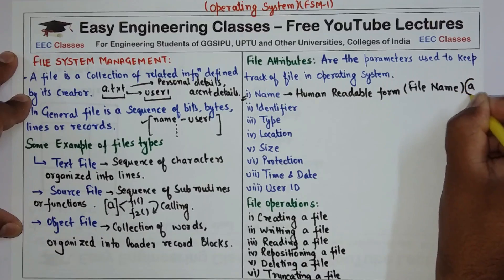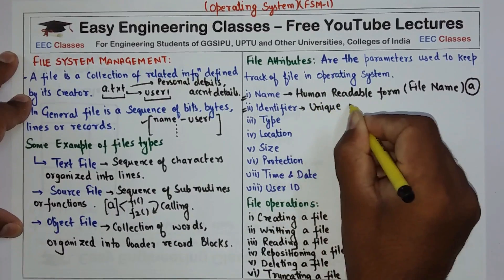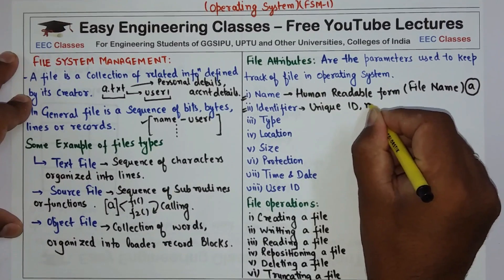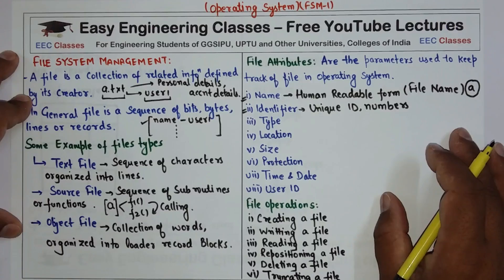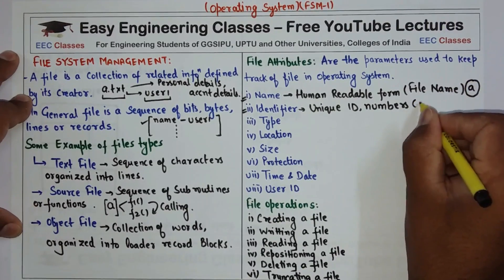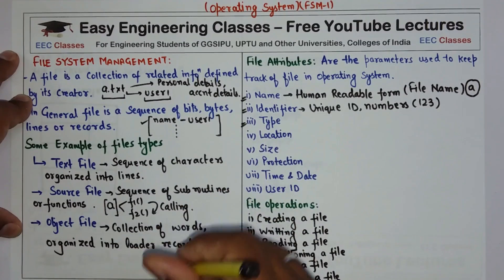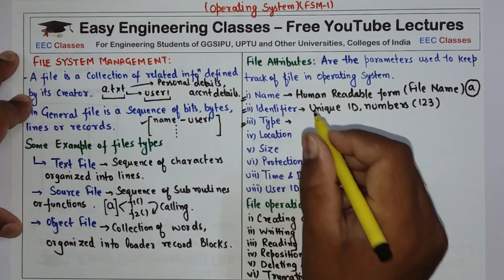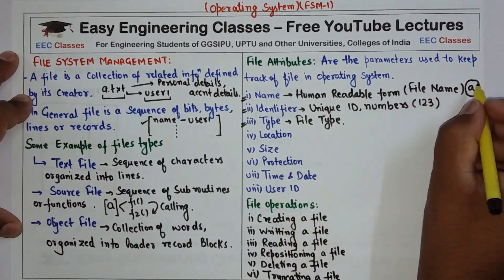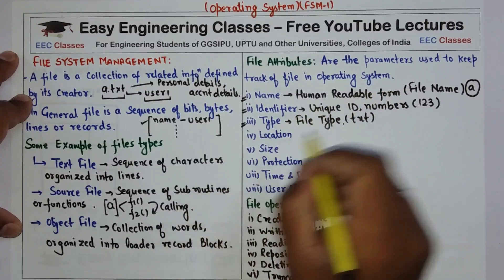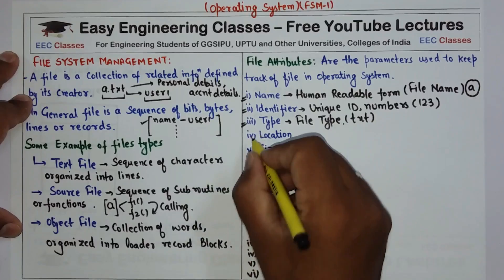The second attribute is the identifier: a unique ID generally represented by numbers that identifies the file within the collection of all files in the operating system. For example, if the ID for file 'a' is 123, then 123 is the identifier. The third attribute is the type, which specifies the file type — for example, if the type of 'a' is 'txt', I know there is a file named 'a' with identifier 123 of type text.